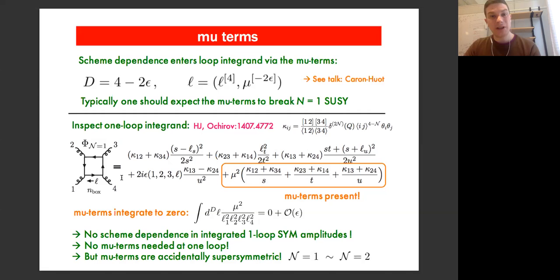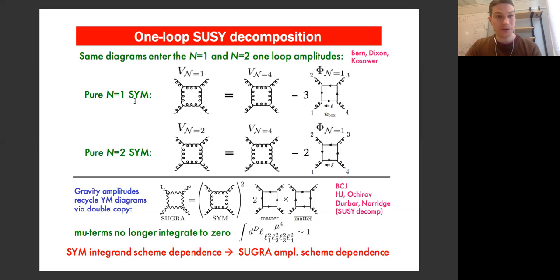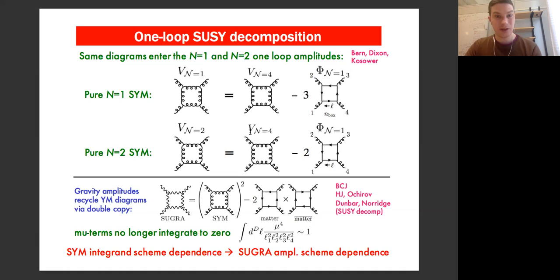What happens if you look at the vector contribution? We have interesting identities called one-loop supersymmetric decomposition identities. Looking at an N equals one vector in the loop, we can decompose it in terms of an N equals four vector minus three chiral multiplets. For N equals two, only this factor of two changes. Taking a linear combination doesn't change how much supersymmetry the actual answer has, so the vector contribution will also accidentally be supersymmetric.